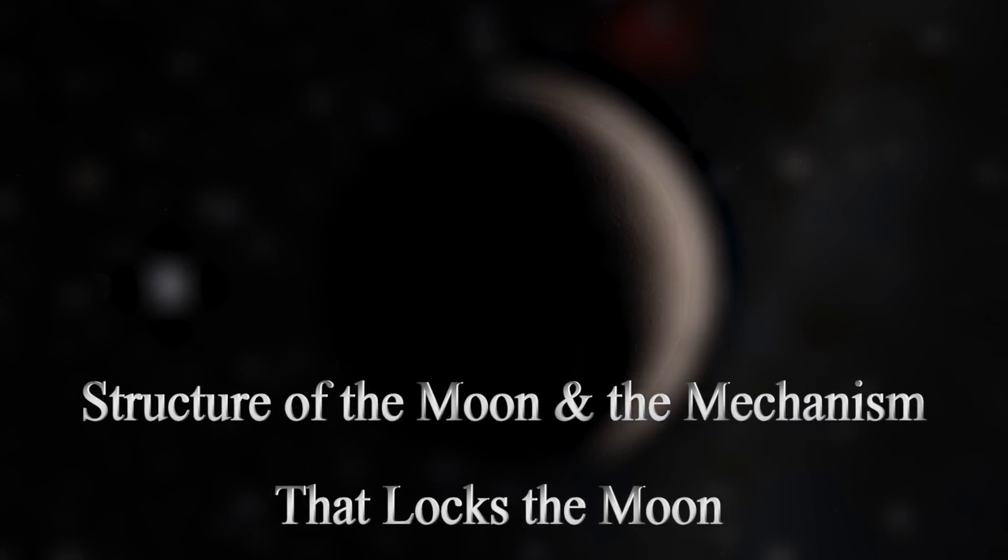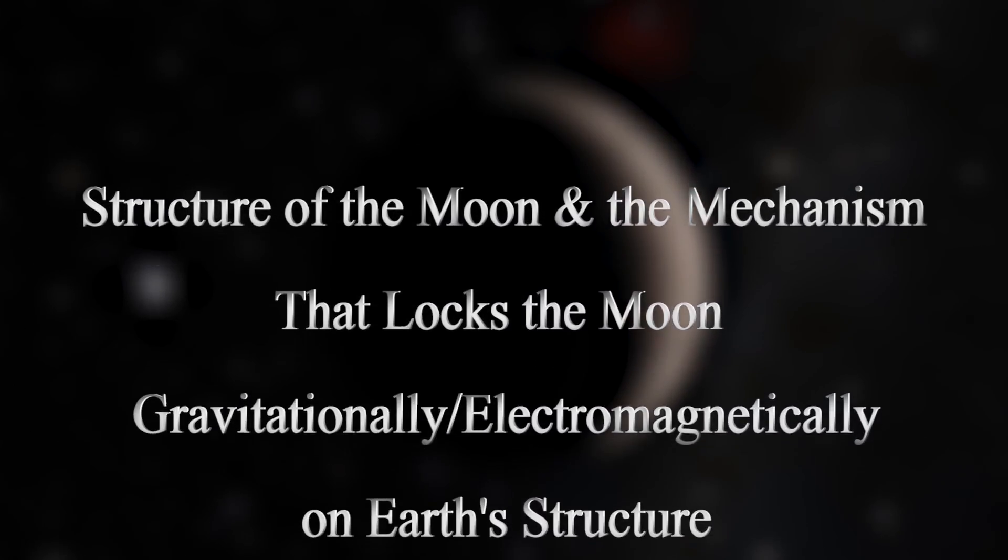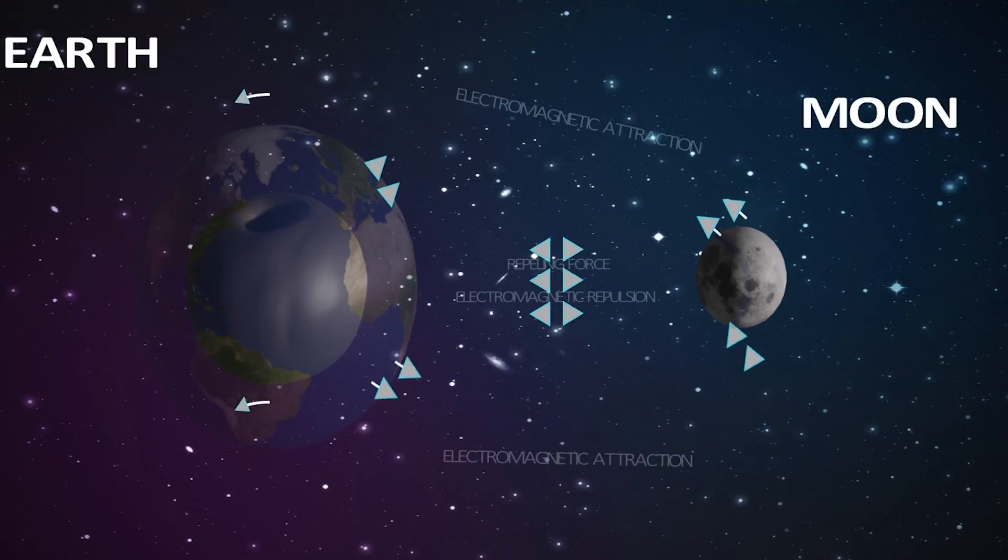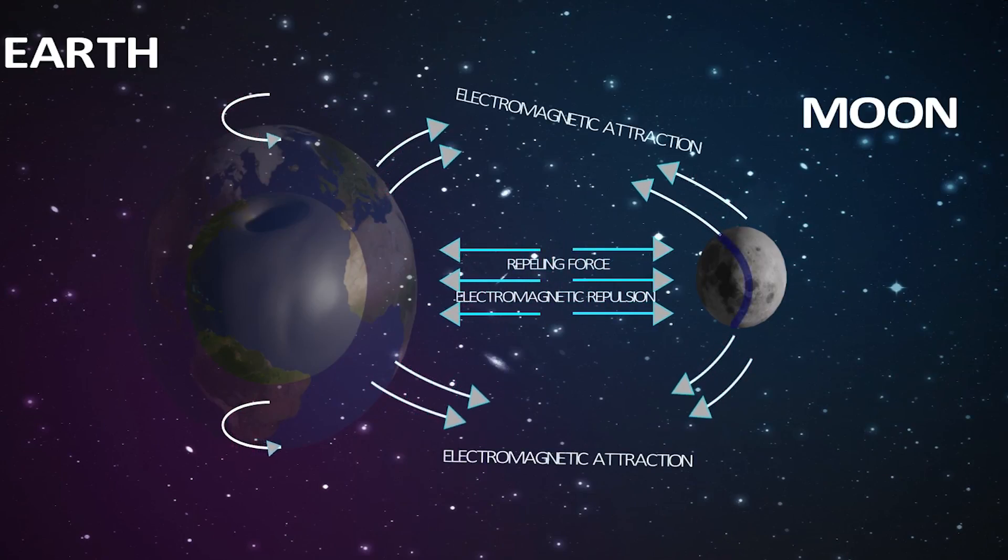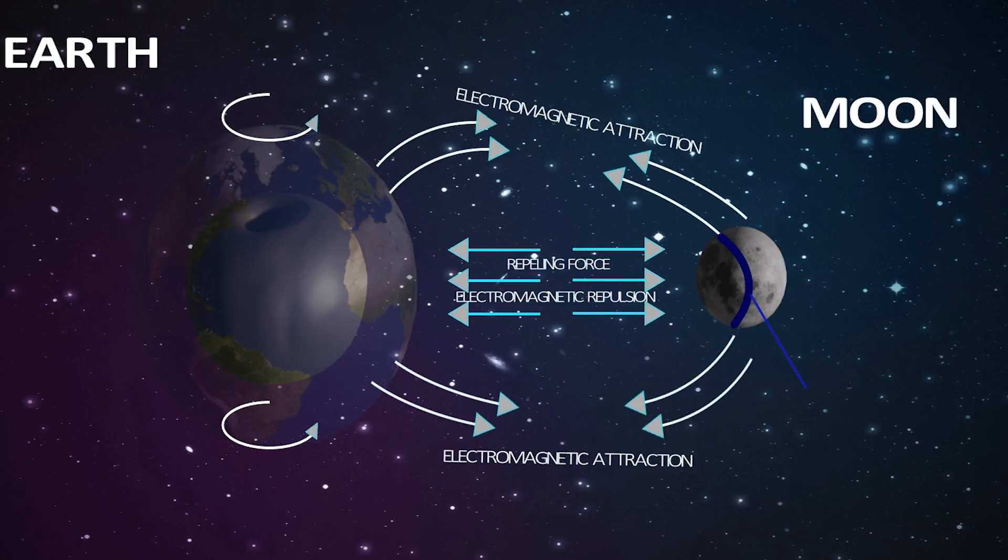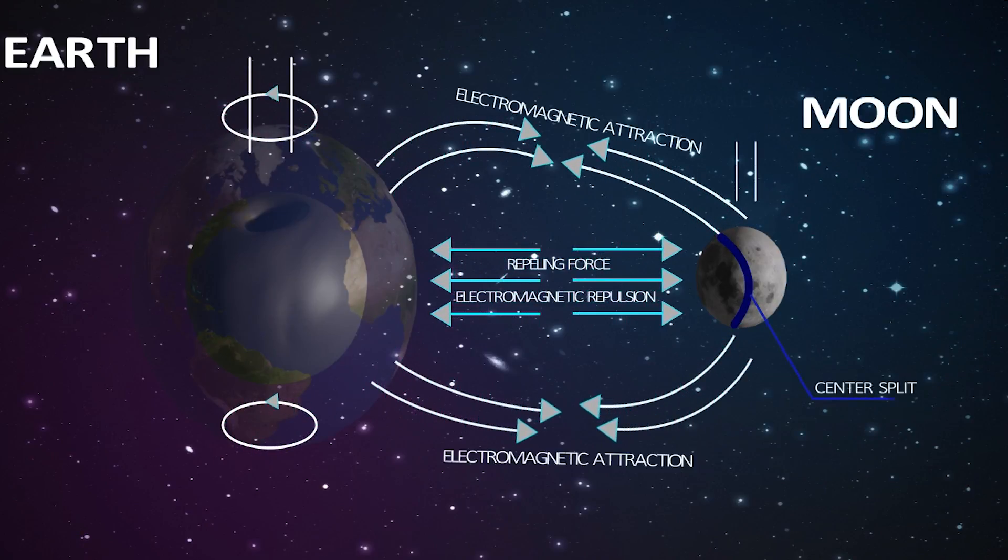The structure of the moon and the mechanism that locks the moon gravitationally on Earth's structure. The moon is locked onto Earth's orbit because of the gravitational and electromagnetic attraction and repulsion between the moon and the Earth.